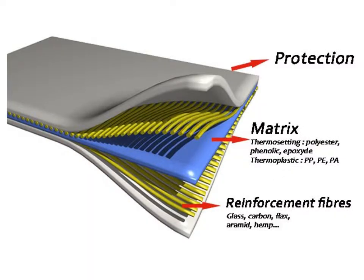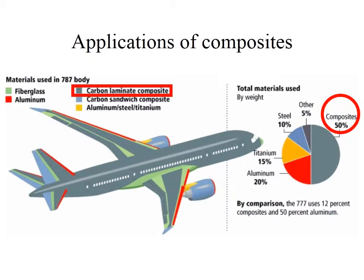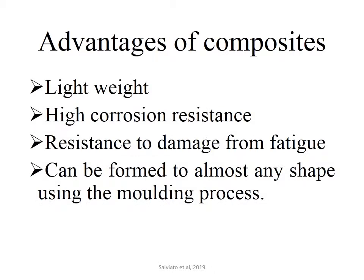This figure shows the schematic representation of composites. Here one layer is reinforcement fiber and one layer is matrix. The Boeing 787 Dreamliner is the first commercial aircraft in which major structural elements are made of composite materials rather than aluminum. These are the advantages of composites.